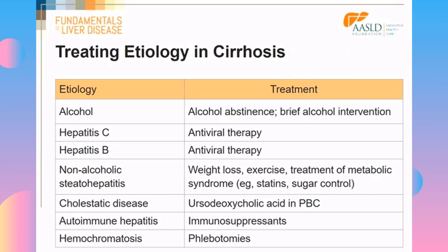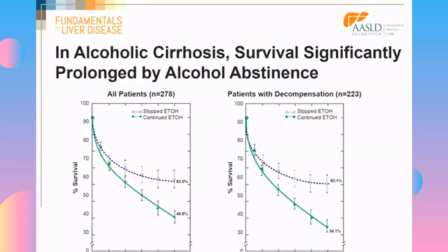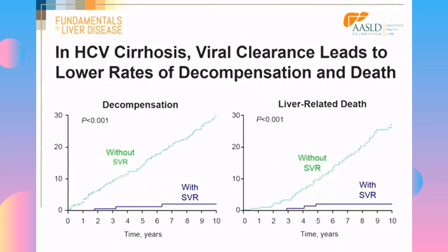For alcoholic cirrhosis, patients who continue to drink have a much poorer survival in all patients, including those who are decompensated, whereas stopping drinking improves survival significantly. For hepatitis C, patients who attain a sustained virological response — meaning they get rid of the virus — have an incredibly low risk of decompensation and a very low risk of liver-related death compared to patients who do not achieve viral clearance.